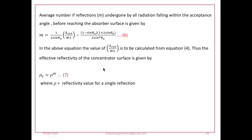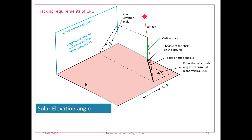In the above equation, the value of A_con can be calculated using the previous expression. This m is used to calculate the effective reflectivity of the concentrator surface: ρ_e equals ρ raised to m, where ρ is the reflectivity value for a single reflection. So we can find out the effective reflectivity using this expression.